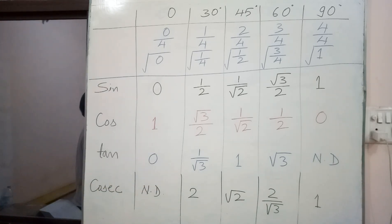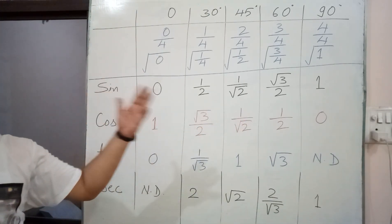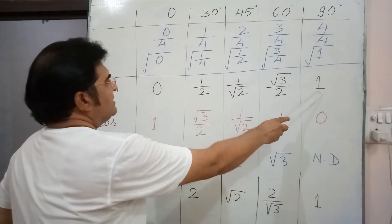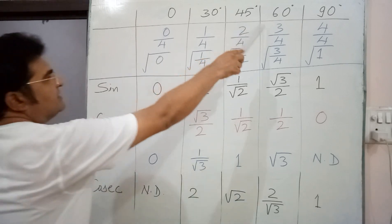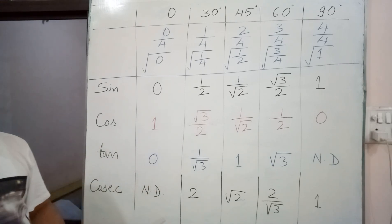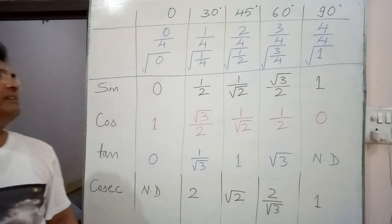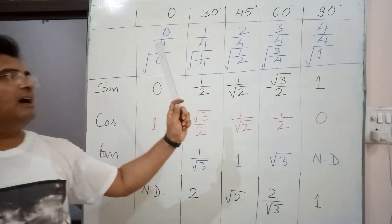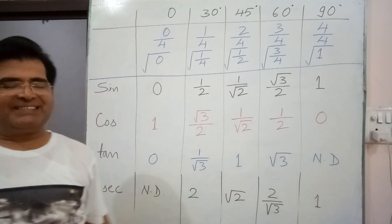The values of cosine are not difficult to remember. Once you write the values of sine, you get the cosine values by reversing the order. Sin 90° = 1 becomes cos 0° = 1. Sin 60° = √3/2 becomes cos 30° = √3/2. Sin 45° = 1/√2 means cos 45° = 1/√2 — no change. Cos 60° equals sin 30°, and cos 90° equals sin 0° = 0.